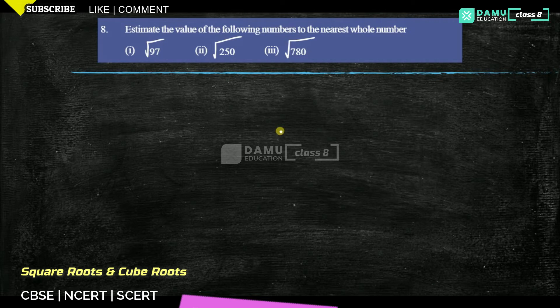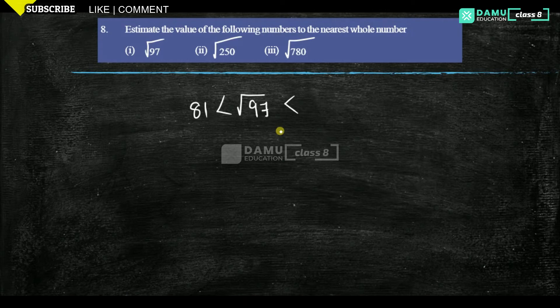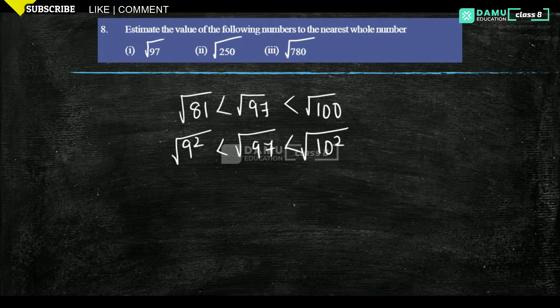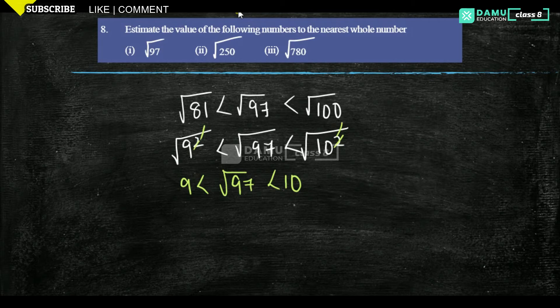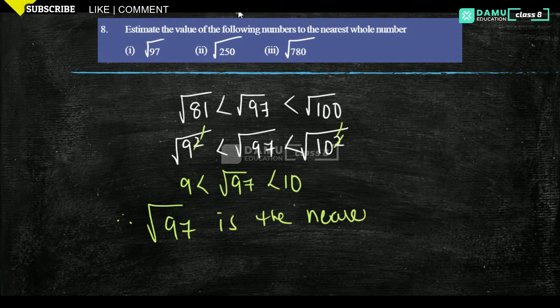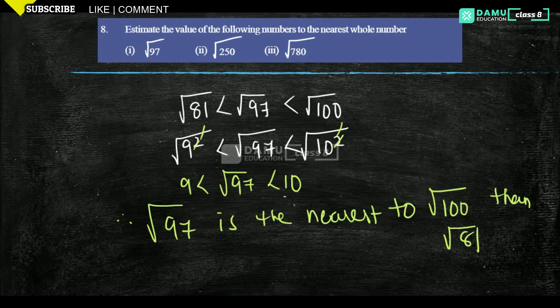Let's take square root of 97. We need to find the perfect square numbers below and above it. Below is 81 and above is 100. Since 81 is 9 squared and 100 is 10 squared, we get 9 < √97 < 10. Since 97 is nearer to 100 than to 81, square root of 97 is approximately equal to 10.